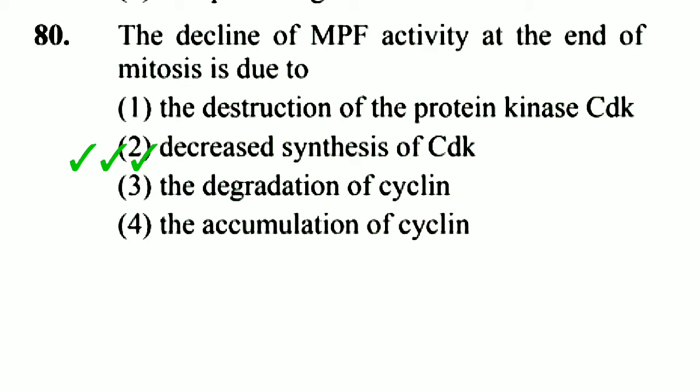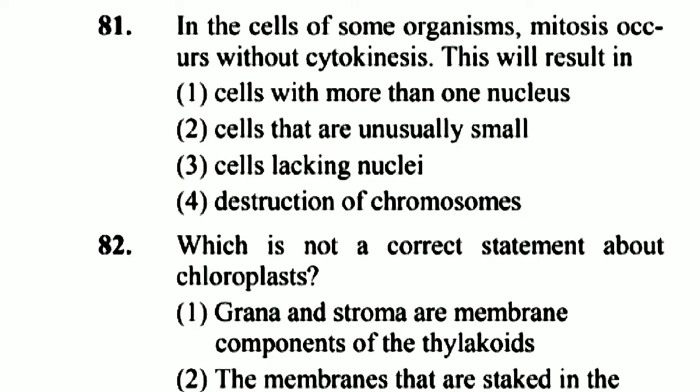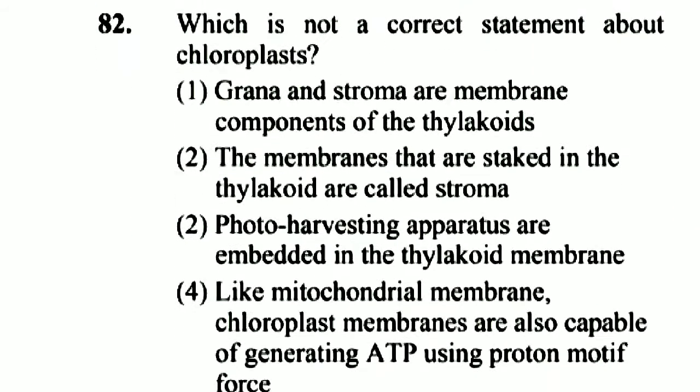Question 81: In the cells of some organisms, mitosis occurs without cytokinesis. This will result in cells with more than one nucleus. Option 1 is right.